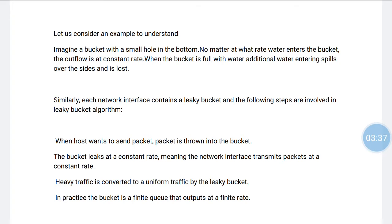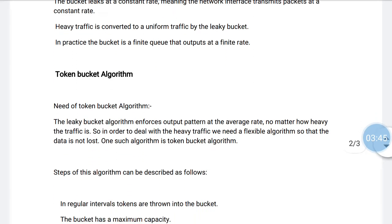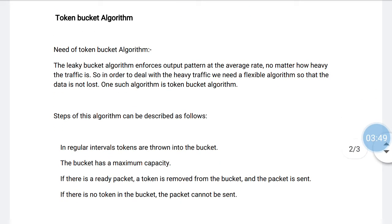In practice, the bucket is a finite queue that outputs at a finite rate. This is the leaky bucket algorithm. Now we have the token bucket algorithm. The leaky bucket algorithm enforces output at the average rate no matter how heavy the traffic is. In order to deal with heavy traffic without losing data, we need a more flexible algorithm — and that is the token bucket algorithm.